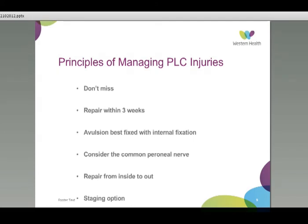Drawing this together into principles: first, do not miss the injury — it is easy to forget that parts of the knee other than the anterior cruciate ligament can be injured in sporting injuries, so an appropriate history and examination directed at detecting that is important. Repair within three weeks has been shown to have better outcomes if operative repair is considered. Avulsion fractures are often best fixed with internal fixation. When performing a repair, do not forget the status of the common peroneal nerve — a soft tissue release surrounding the nerve may be helpful at the time of surgery. Repair from inside to out, and consider the option of staging procedures: performing cruciate ligament and capsular repair in the first operation, then returning later for further repairs if instability persists.